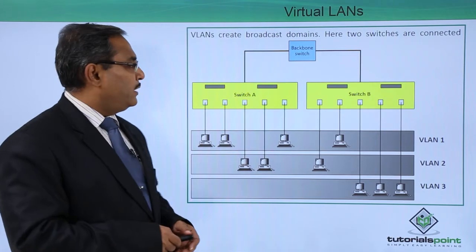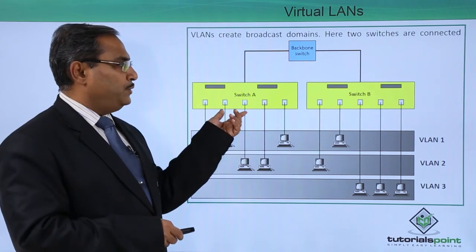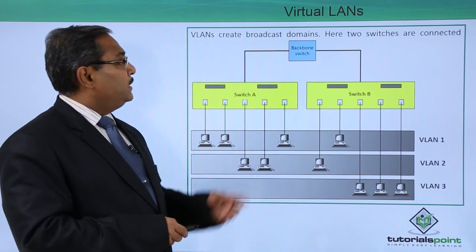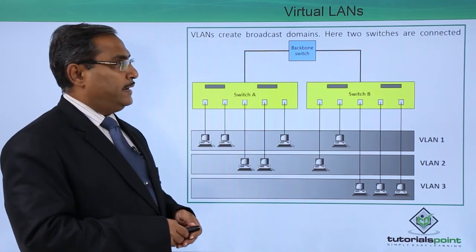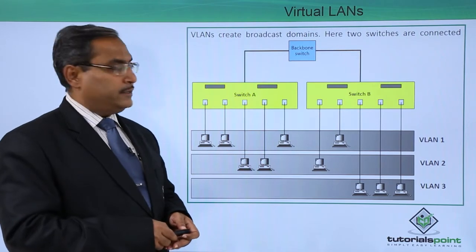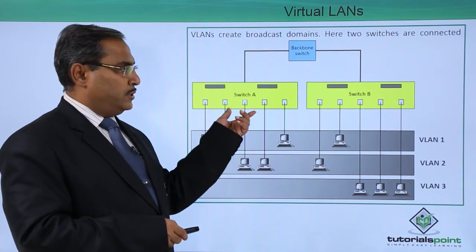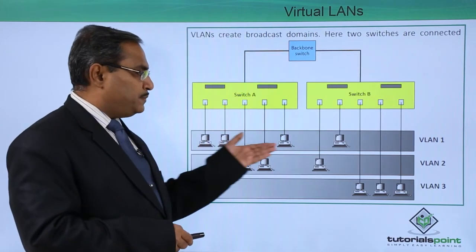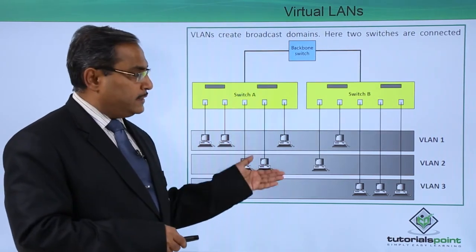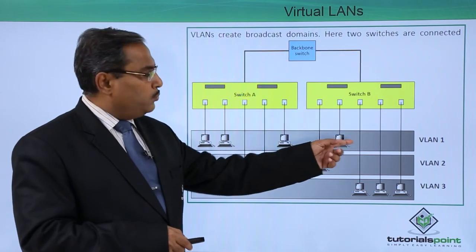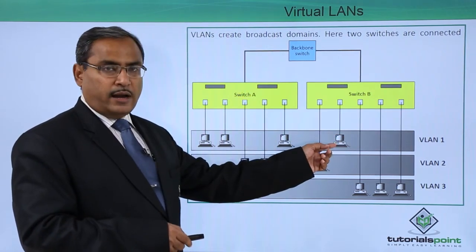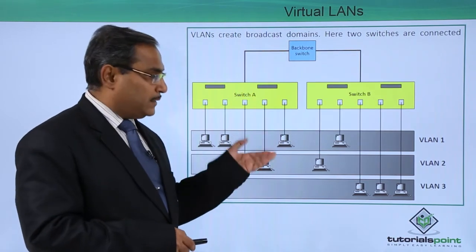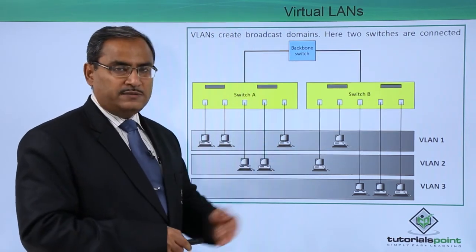In this another diagram, you can find that we have switch A and switch B, and there is a backbone switch. VLANs create broadcast domains and here two switches are connected. These particular switches have their respective nodes. It is very interesting that in VLAN 1, we have some stations connected to switch B and some stations connected to switch A, but all of them are under VLAN 1.